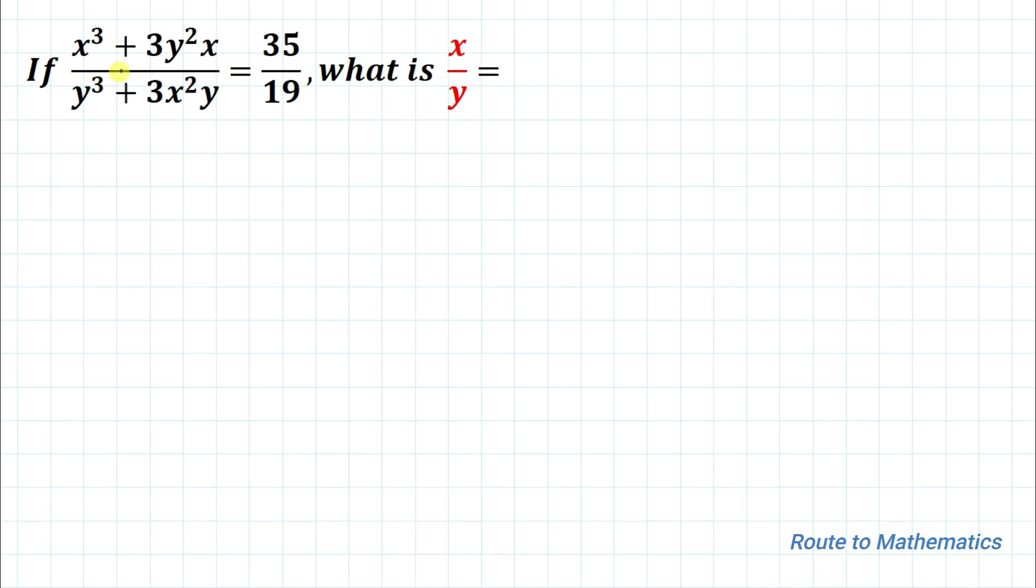So the given question is: if x³ + 3y²x divided by y³ + 3x²y equals 35/19, then what is x/y?